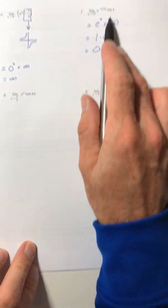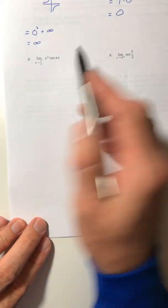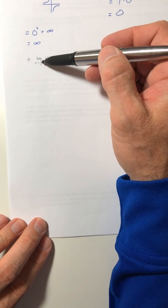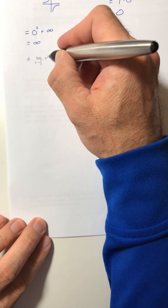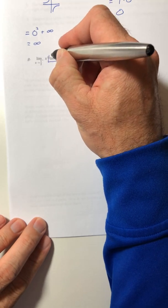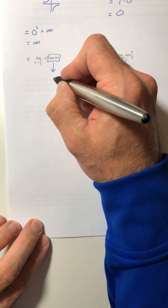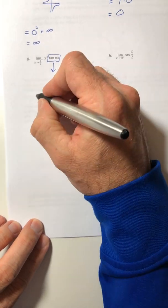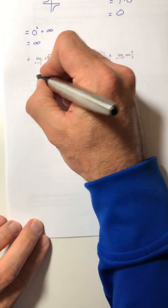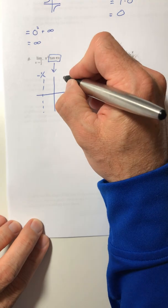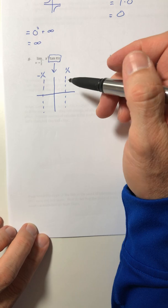So they're going to sneak a couple of these in there on you and see if you know what to do. All right, part G. If we stick in the one half in here, that's going to make it undefined. So let's just look at tangent of pi x as a graph. So tangent has those vertical asymptotes. And in this case, they're at positive and negative one half.